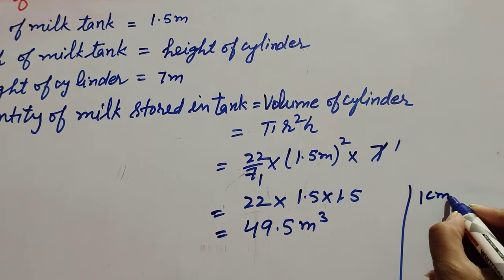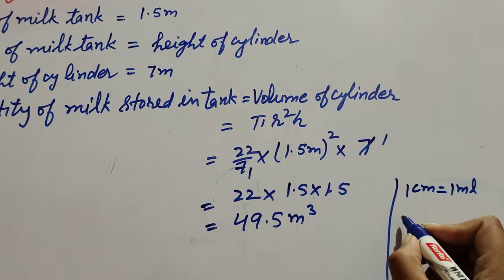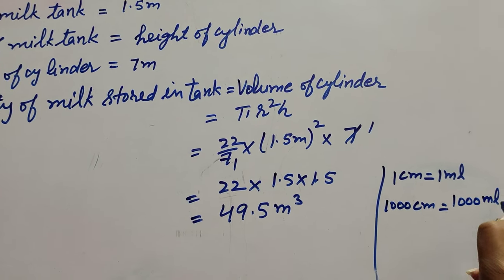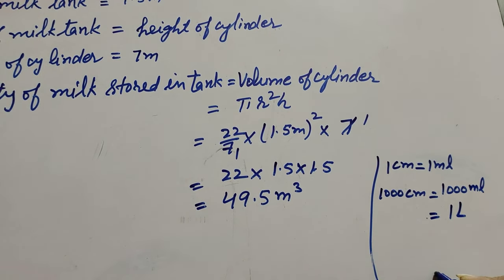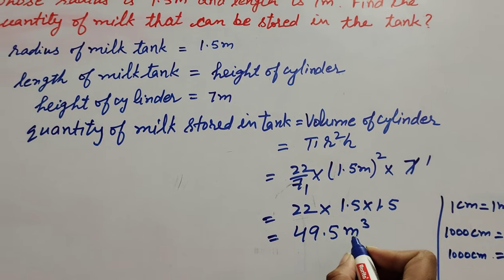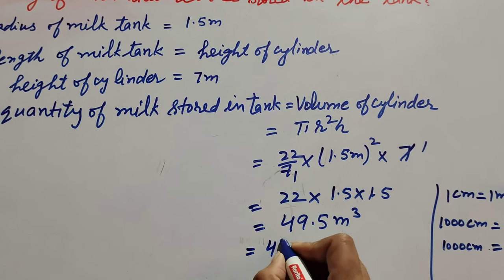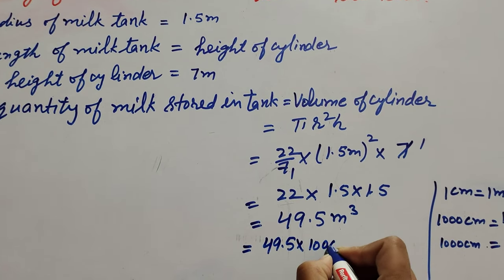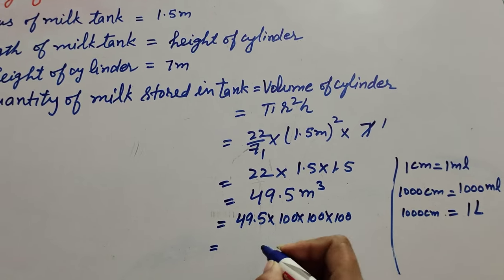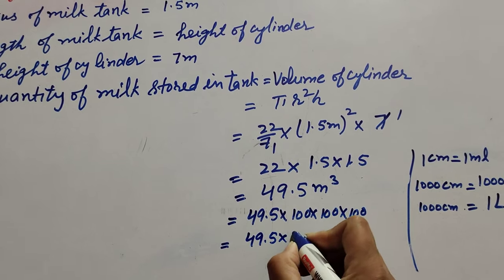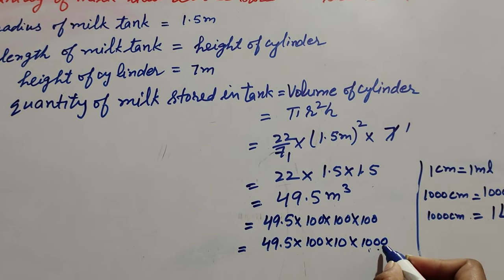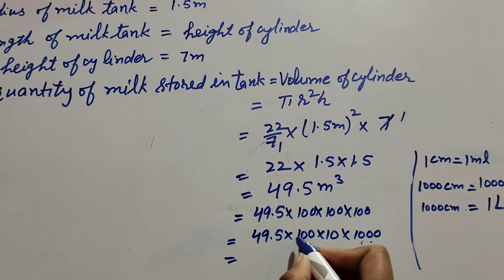We know 1 centimeter is equal to 1 milliliter, and 1000 milliliter is equal to 1 liter. Since the unit is in meters, we change it into centimeters by multiplying by 100. We multiply three times because the unit is meter cube: 49.5 multiplied by 100 multiplied by 100 multiplied by 100, then divide by 1000 to convert to liters.